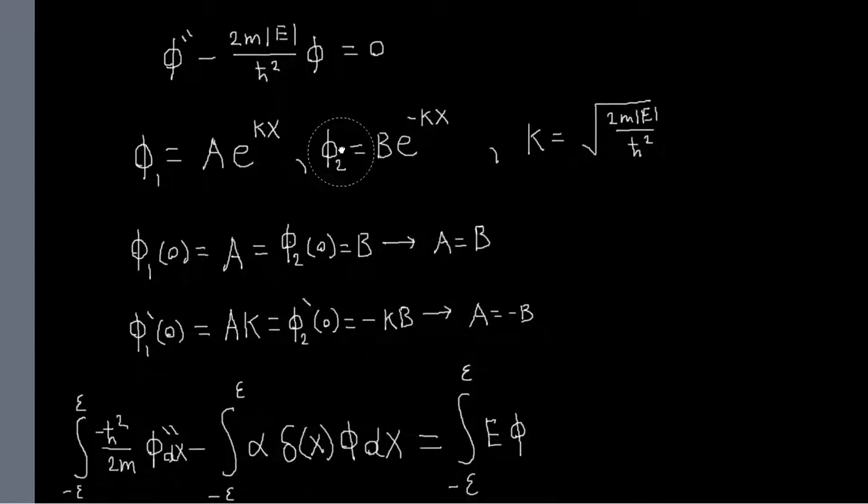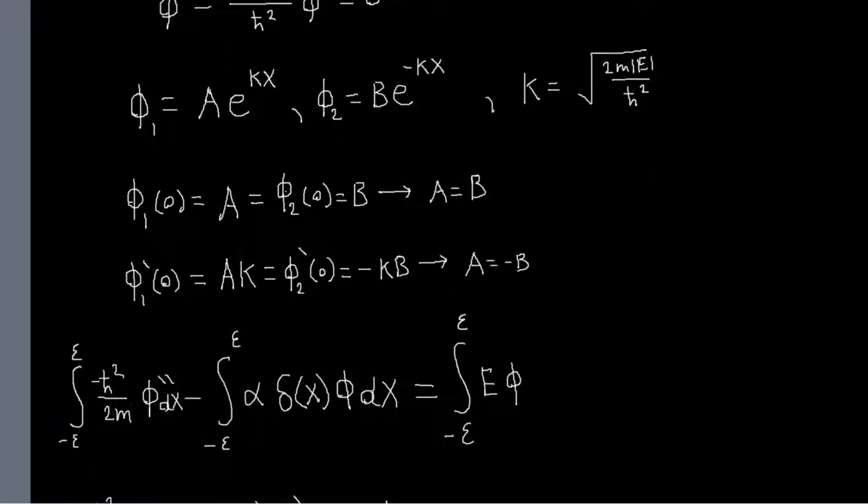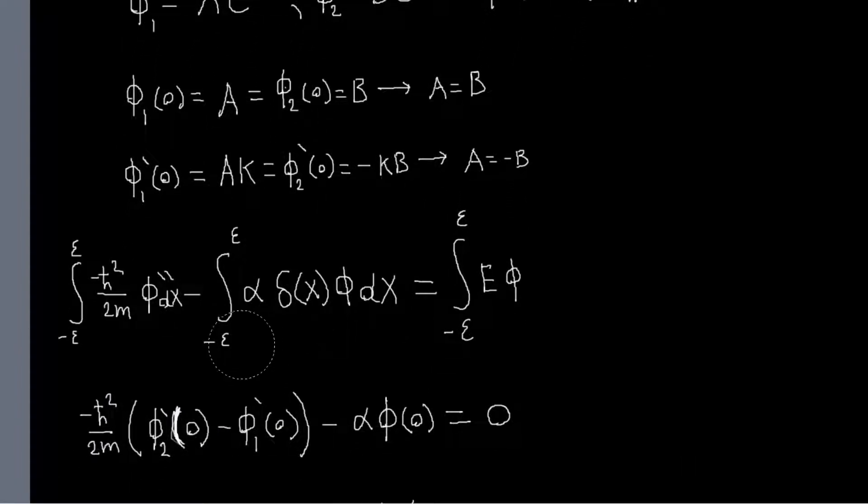So what we'll do is we'll just take that equation and we will integrate from minus epsilon to epsilon, where epsilon is just a tiny number, because I just want to, the only thing that matters is that I integrate over the delta function, so it doesn't matter how big my range is as long as it covers zero. So we're just going to do this integral, and then we'll take the limit as epsilon goes to be really small. So we just need to take the integral of each of these terms.